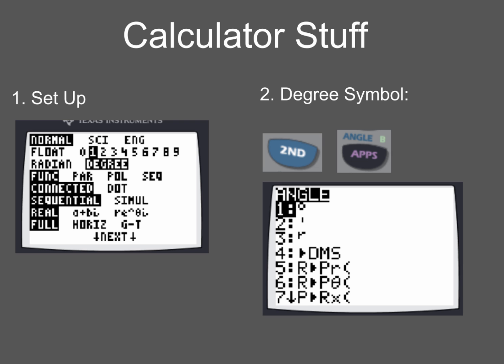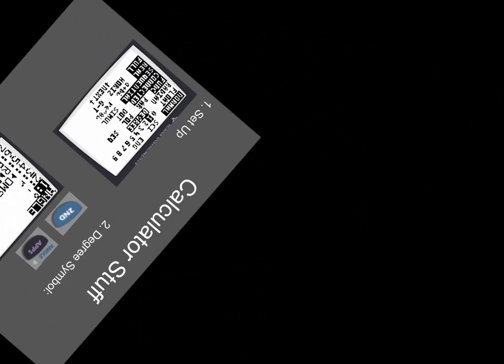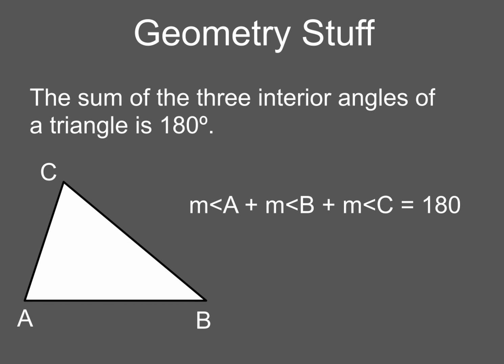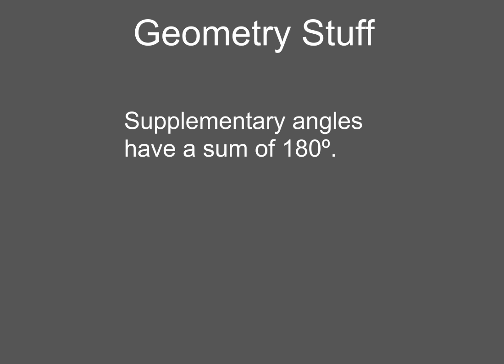The sum of three interior angles of a triangle is 180 degrees. Yeah, I know you remember that from geometry. And here's one other piece from geometry I bet you remember. Supplementary angles have a sum of 180 degrees. So those are two key pieces from geometry that you're going to have to remember.